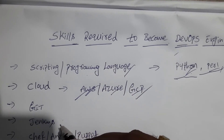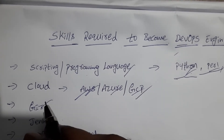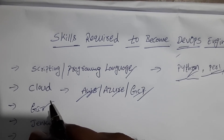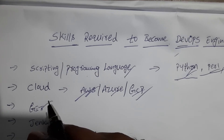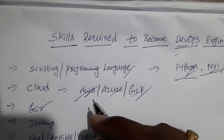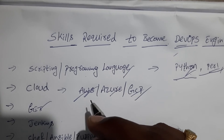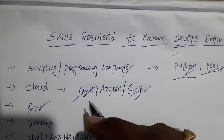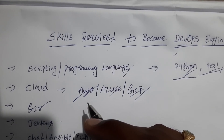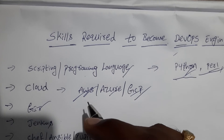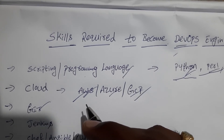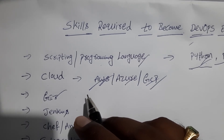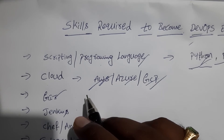The next one is Git. Git is the most commonly used version control system. Git tracks the changes you make to files, so you have a record of what has been done and you can refer to specific versions should you ever need to. Git also makes collaboration easier, allowing changes by multiple people to all be merged into one source.